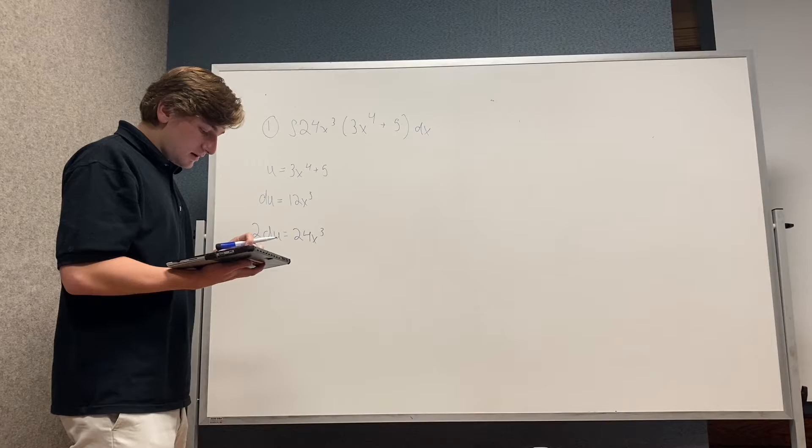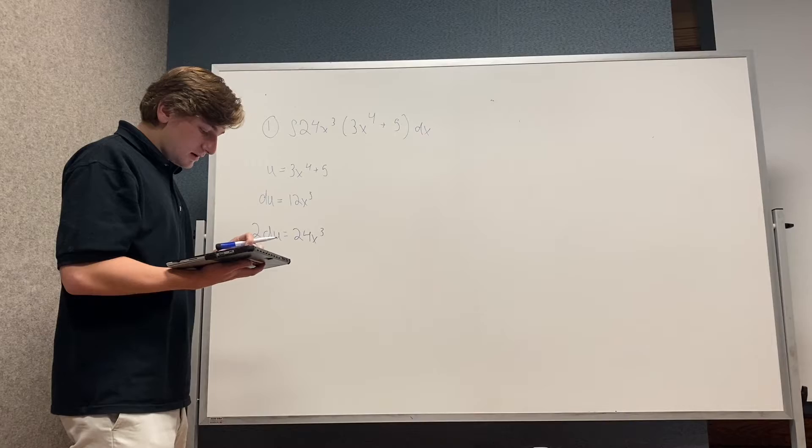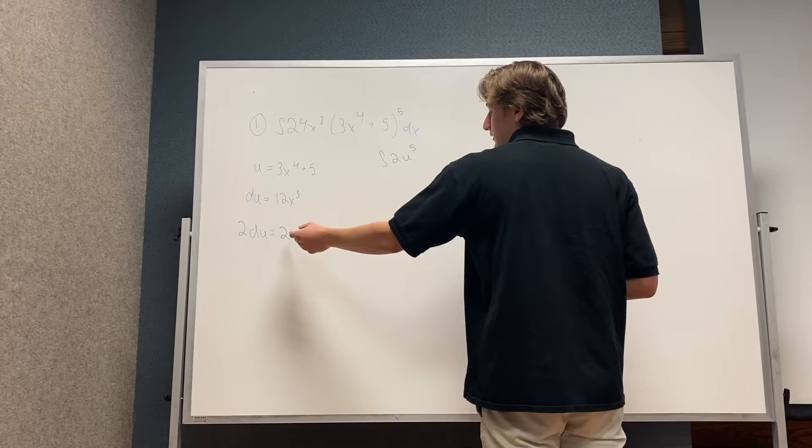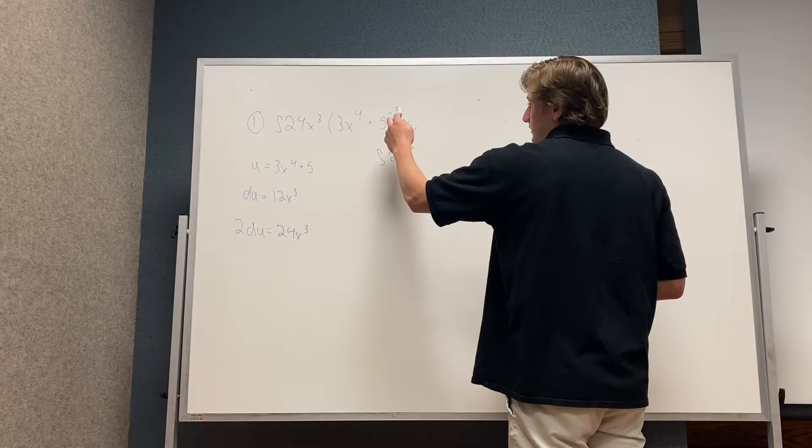Then after that, you're just going to do integral 2u to the 5th. So you take the 2 from there times u, which is right there, and then to the 5th, because this is all to the 5th. So you're substituting u, which is that.